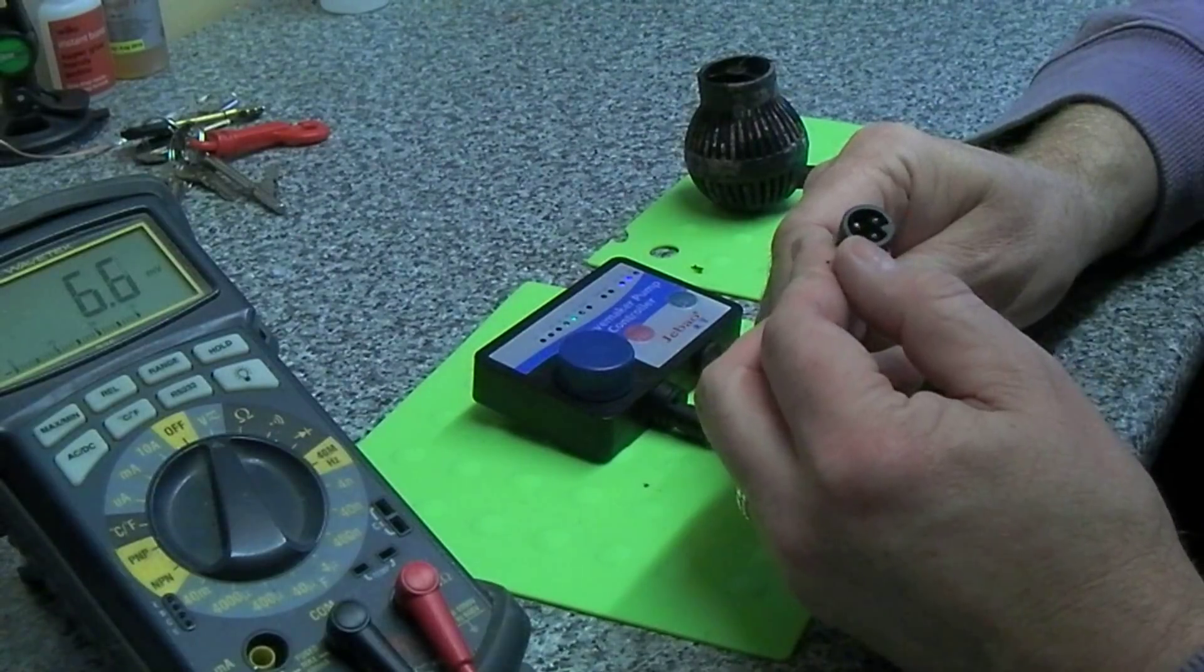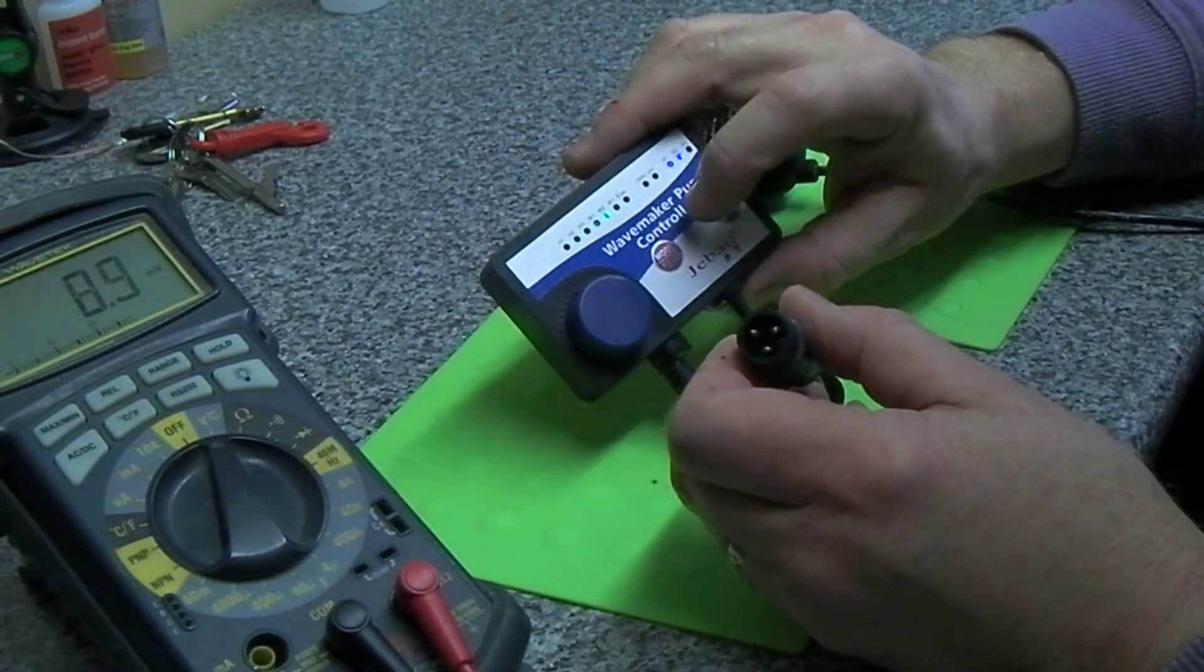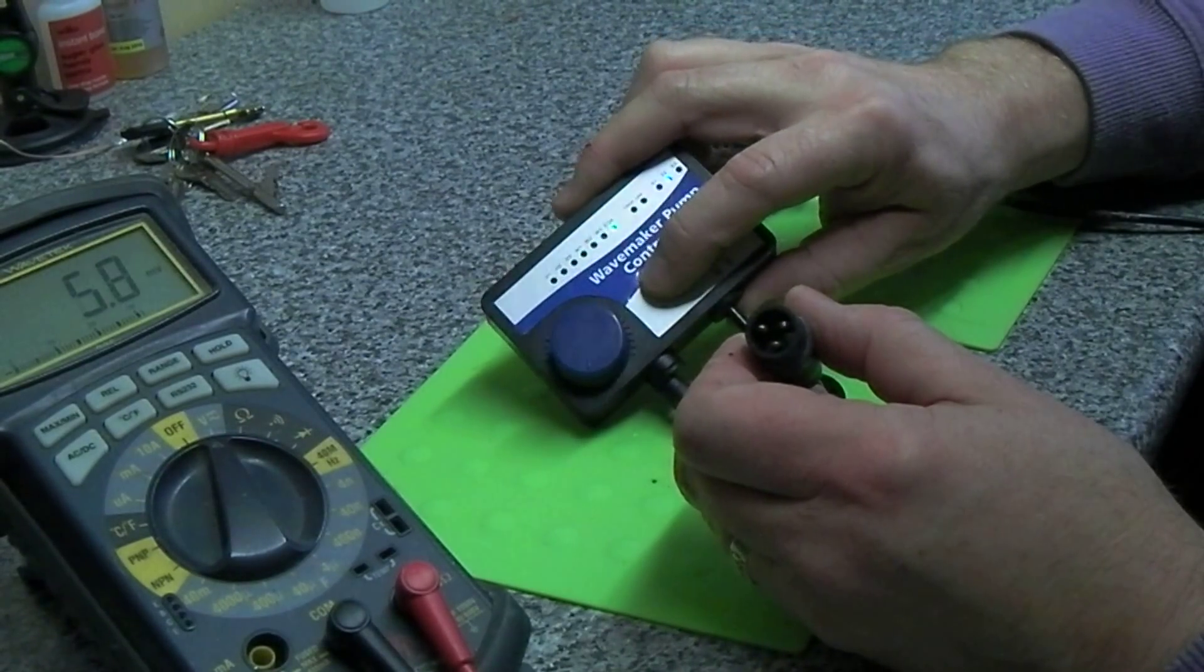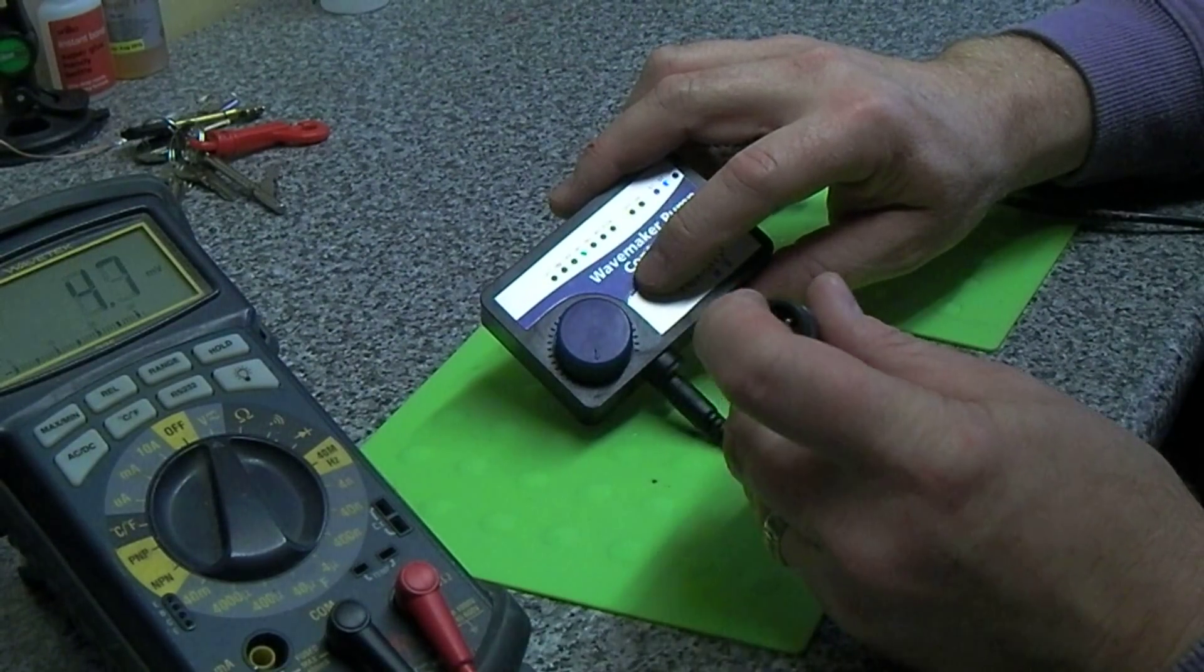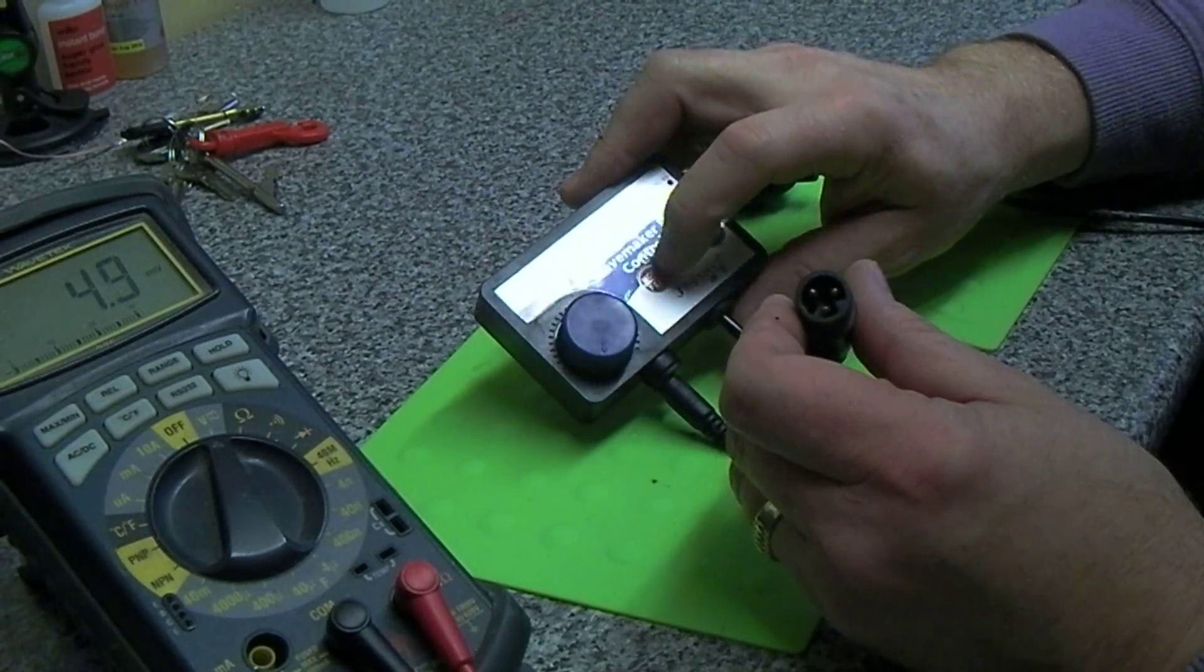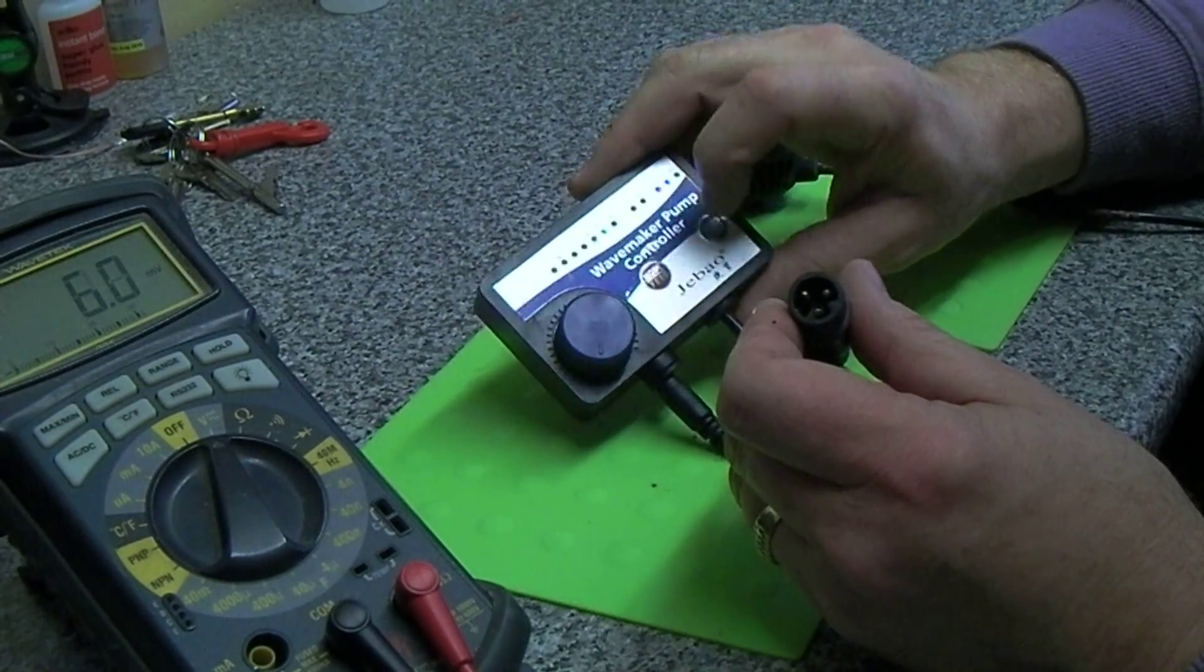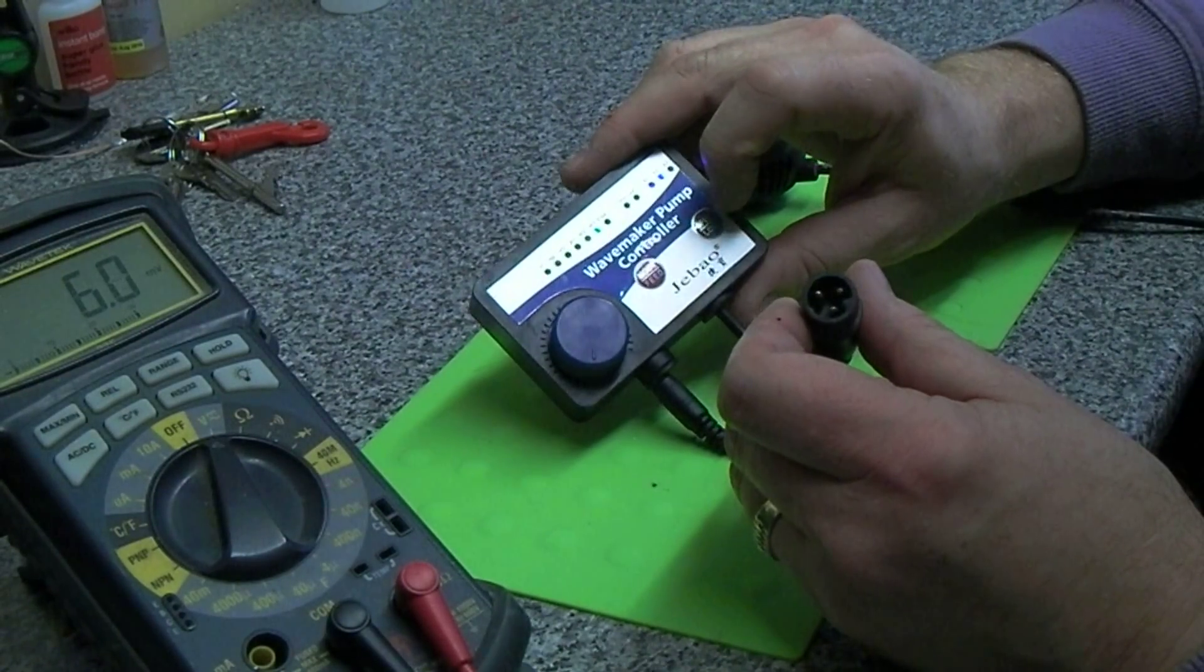On the other one is a varying voltage depending on the function that you've selected. So if you put it on one of the wave features, you can see the voltage pulsing on and off to create the wave. As you step through the functions and the speeds, you'll see the voltages varying on one of those pins.